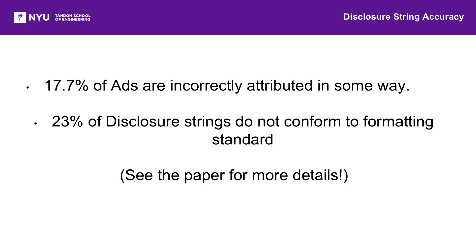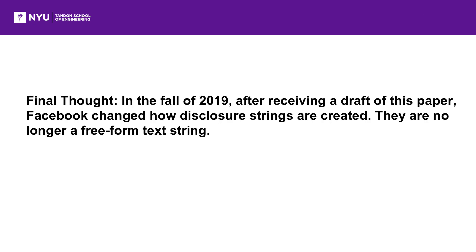Please take a look at the paper if you're interested in the details of these analyses. Between the lack of enforcement and general errors by honest advertisers, we don't recommend disclosure strings be used to understand political ad spending. However — and this is a big however — in the fall of 2019, after receiving a draft of this paper, Facebook changed how disclosure strings are created. They're no longer a freeform text string, so we're hoping that they'll be useful in the future.